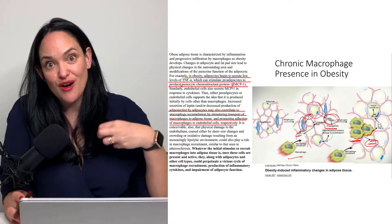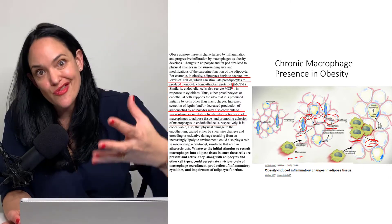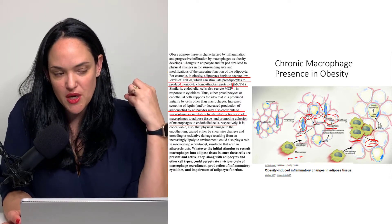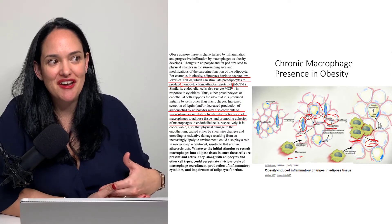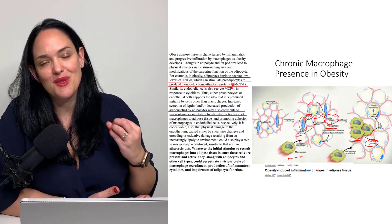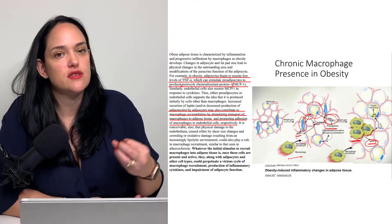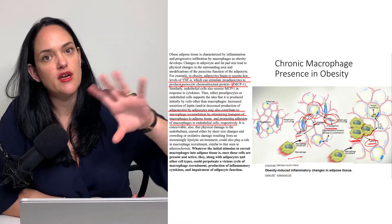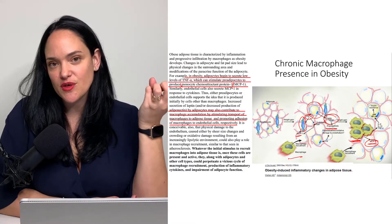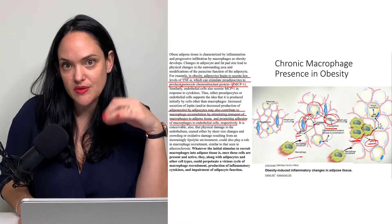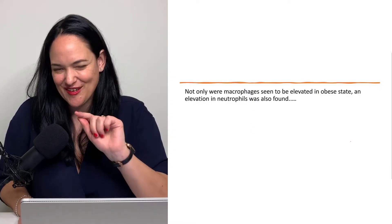Those macrophages can also secrete their own chemokines, which then promote more inflammatory factors coming to that area as well. We have to keep reminding ourselves that this is not a simplistic system — nothing in the body occurs in isolation. It's not just macrophages, not just neutrophils, not just tumor necrosis factor alpha. There's a coordinated process increasing the presence of immune cells in the adipose tissue of individuals with obesity, especially at higher levels of obesity.